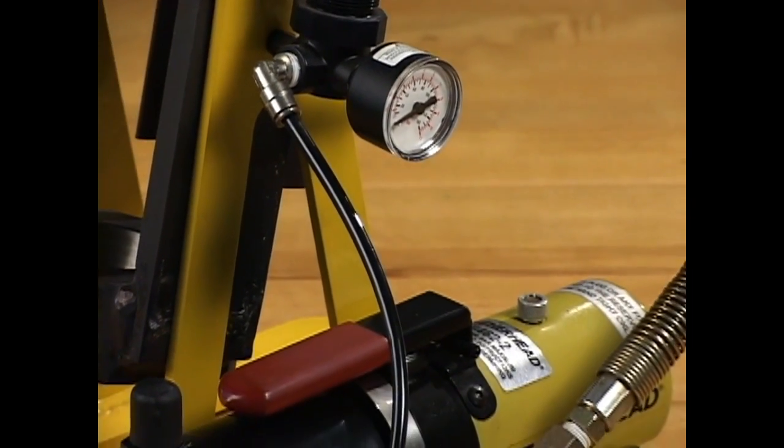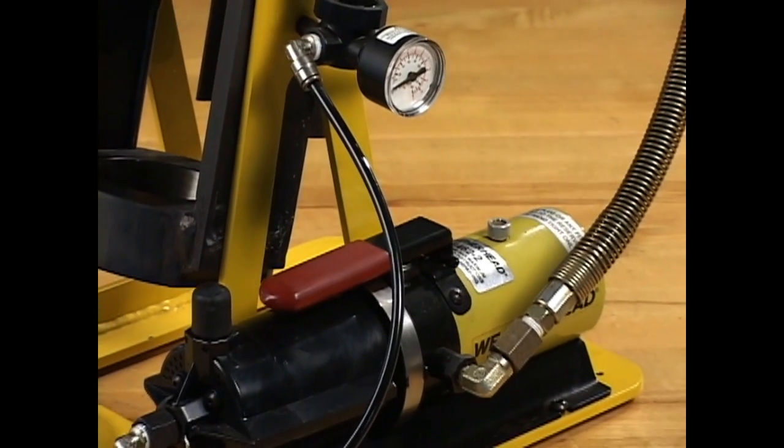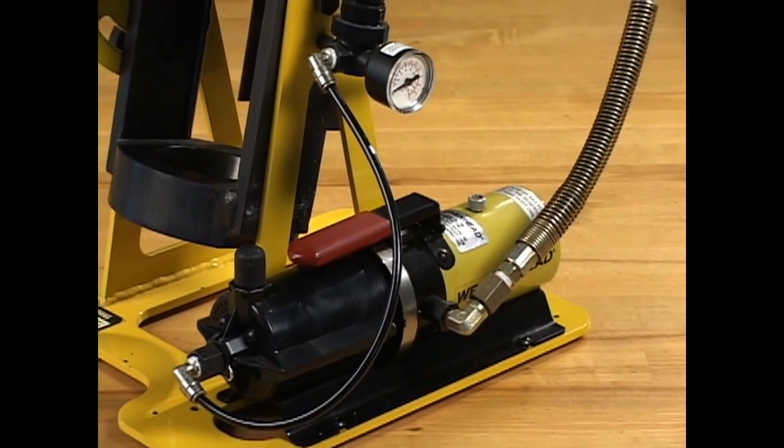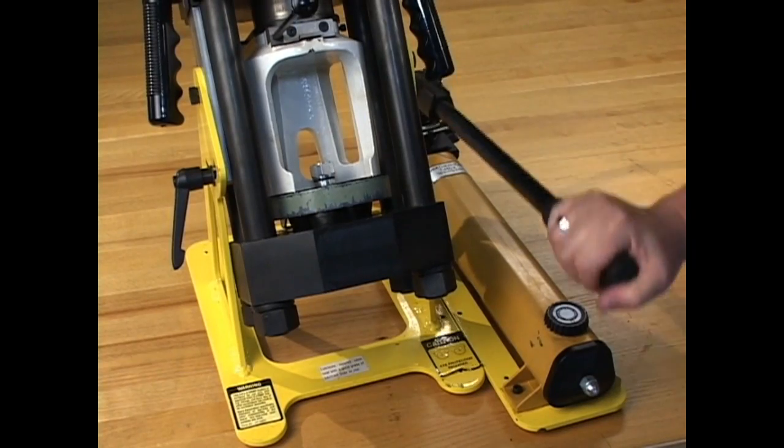Portable ColoCrimp models, the ColoCrimp 1 and the ET1000 also use an air over hydraulic pump or a hand operated pump.